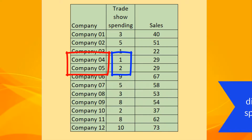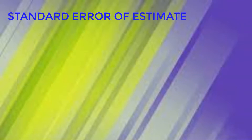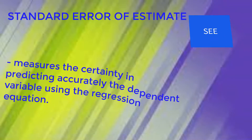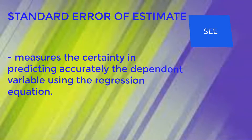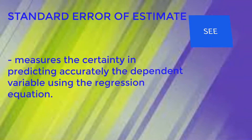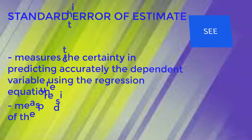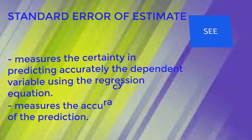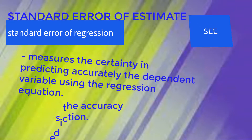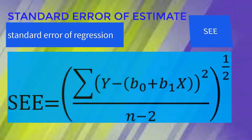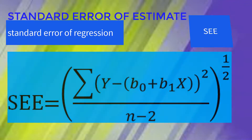The standard error of estimate, or SEE, is used to measure the certainty in accurately predicting the dependent variable y using the regression equation. In simple words, it measures the accuracy of prediction. It is also called the standard error of regression. This is the formula for SEE — let's explain the formula and solve its value at the same time.